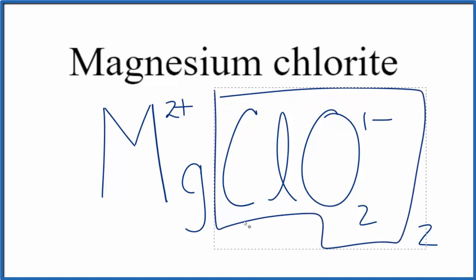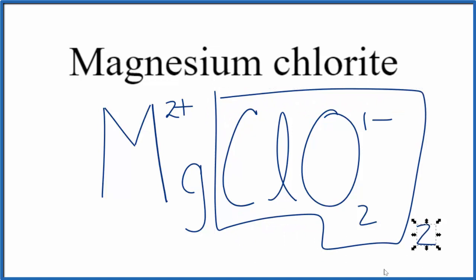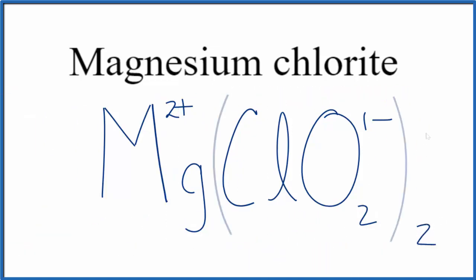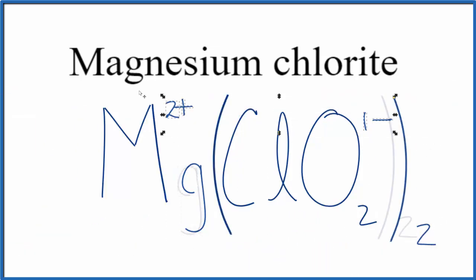We would need to replace this with parentheses since we have two chlorite ions. Then get rid of these charge symbols. So this is the formula for magnesium chlorite, Mg(ClO2)2. This is Dr. B, and thanks for watching.